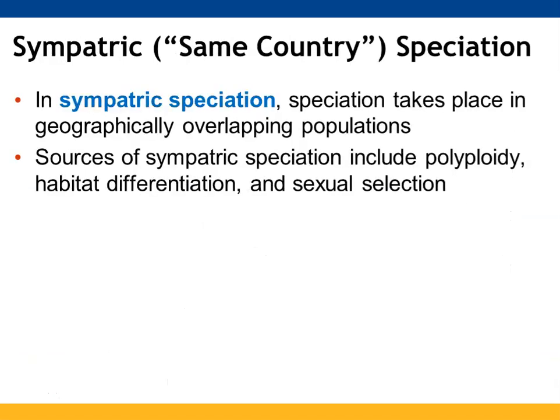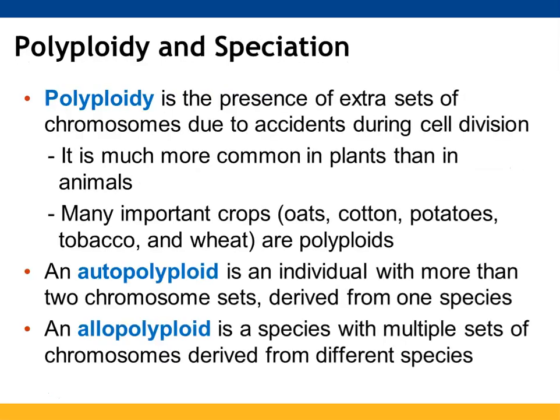Sympatric speciation takes place in overlapping populations geographically. Factors that could lead to sympatric speciation include polyploidy — having multiple copies of chromosomal sets — habitat differentiation, and sexual selection.